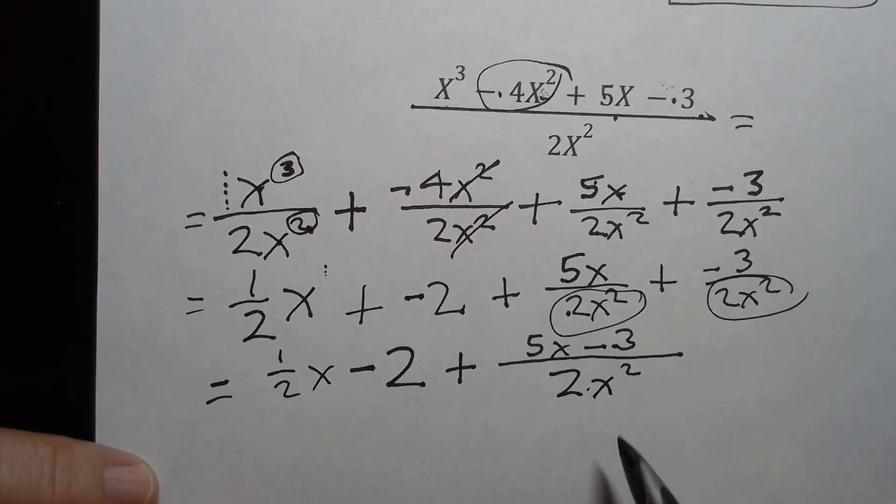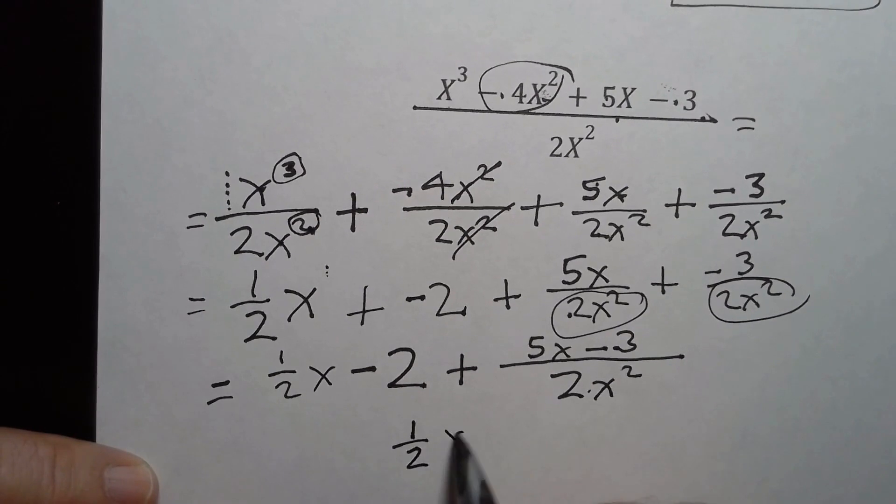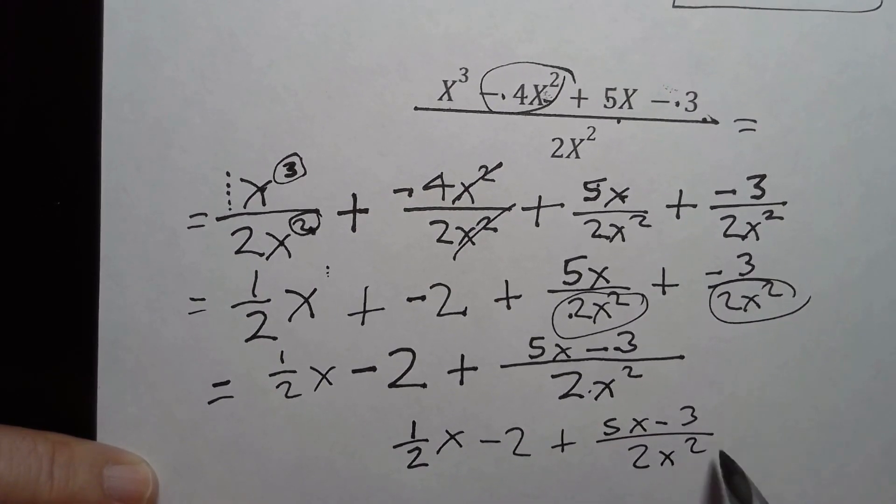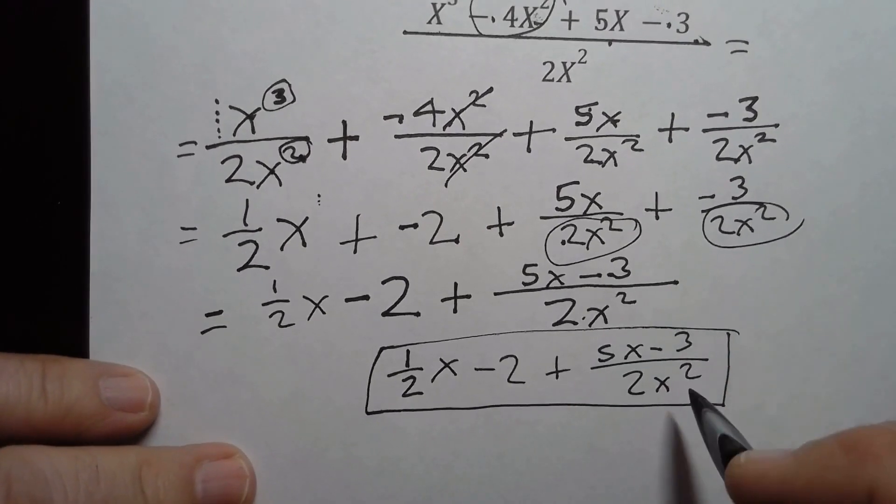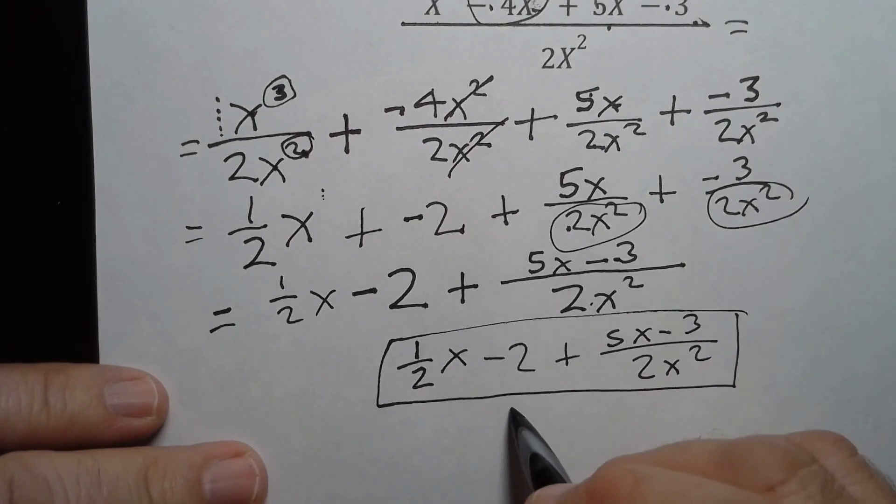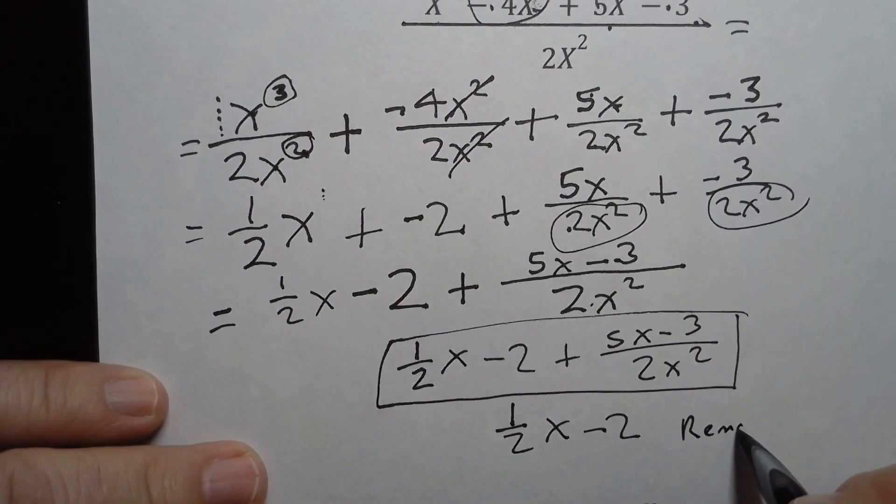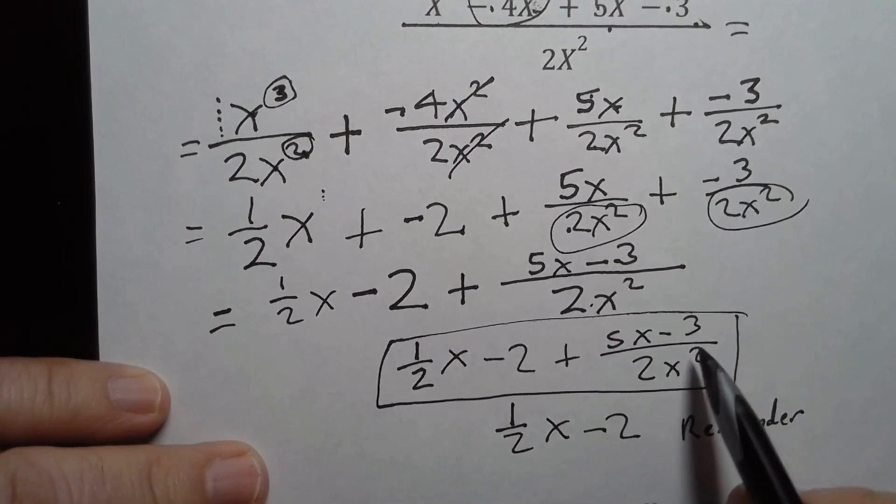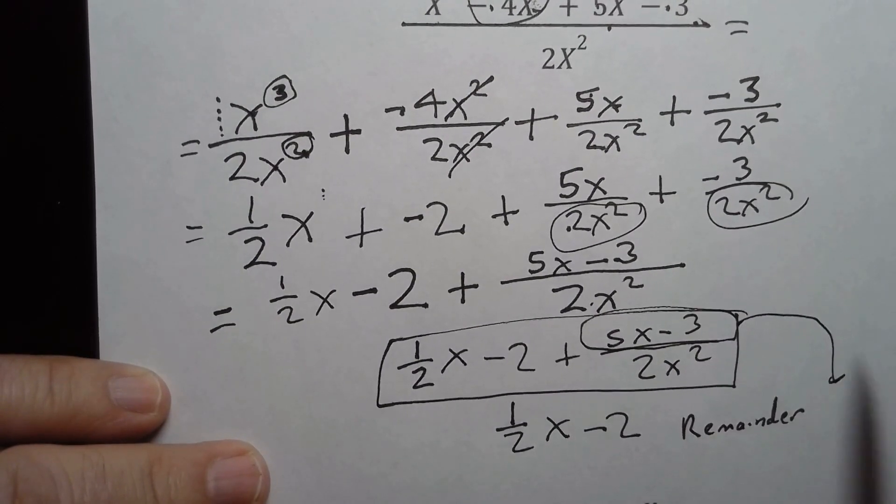So that should be our final answer: 1/2 x minus 2 plus (5x minus 3) over 2x². That's our answer. And I could also write it in a remainder fashion, so I could say the answer is also 1/2 x minus 2 with a remainder - and remember the remainder isn't all of this, it's just what's on top. Another pro tip: it's always just what's on top - 5x minus 3.